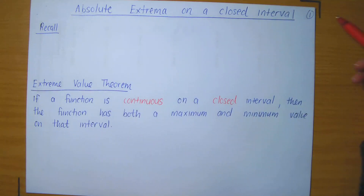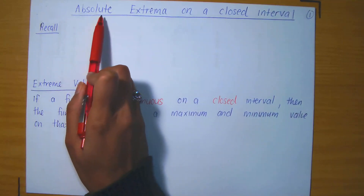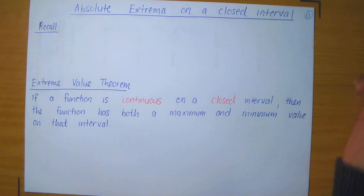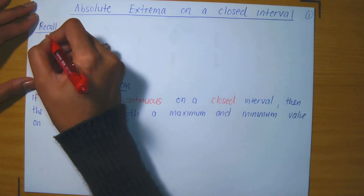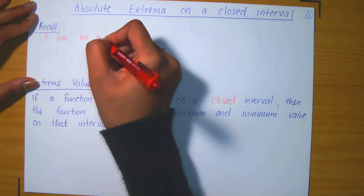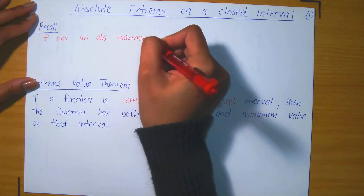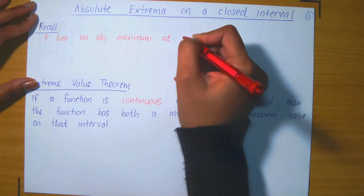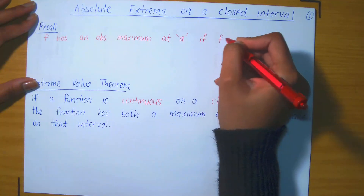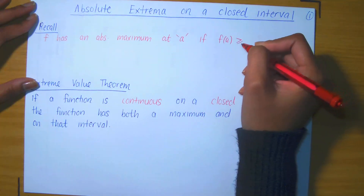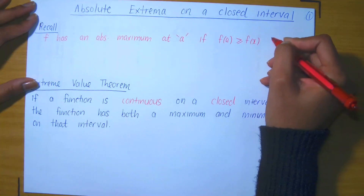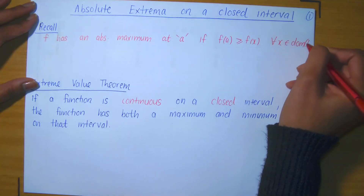Today we're going to be discussing absolute extrema on a closed interval. First, recall what absolute extrema are. A function f has an absolute maximum at some point a if f(a) is greater than or equal to f(x) for all x in the domain of the function f.